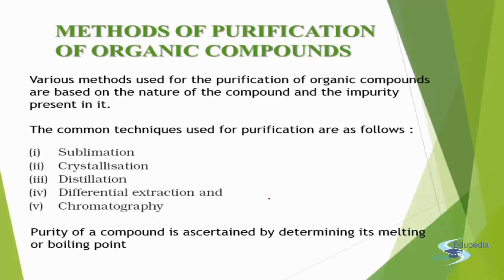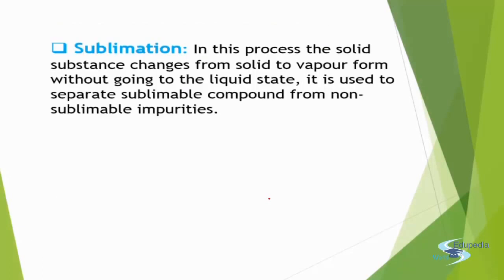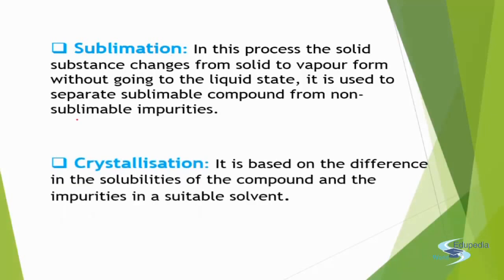The first method is sublimation. Sublimation is the process in which the solid directly changes into vapor without going into its liquid phase. This property is used where either the impurity or the organic compound is volatile. Generally, sublimation technique is used when our organic compound is sublimable whereas the impurities are non-sublimable, and that way we separate them.